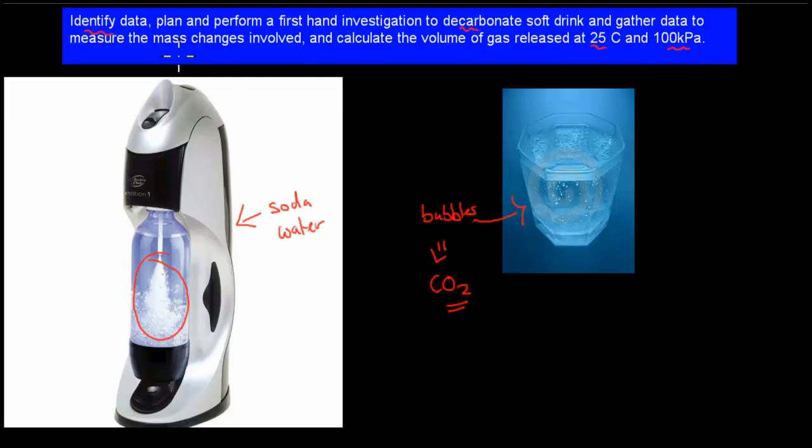So what you have to do is you have to check how much mass you lose in terms of if you have that standing around for too long. And that mass would obviously be due to the loss of these carbon dioxide bubbles. And what you then have to do is calculate how much volume that gas would have taken up using the actual gas equation, which we went over in the last video.